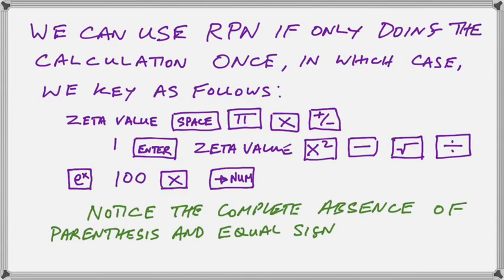When we enter pi, it enters it as a symbol, not as a decimal number. So we always use that arrow to number key at the end there in order to give us our final answer as a decimal value in all of our examples.